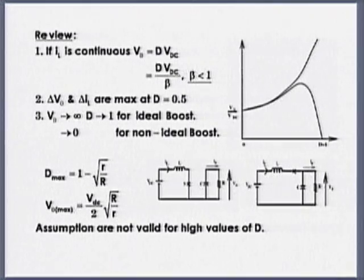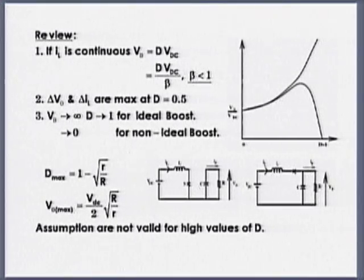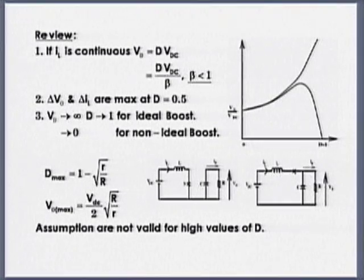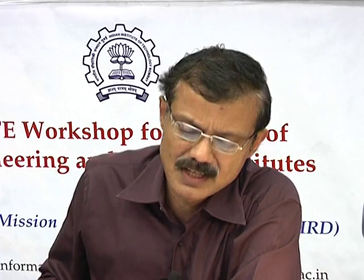As the power rating increases, you may have to parallel them and our control strategy may change. All these issues we will discuss when we finally integrate the entire solar system. Right now I am just discussing the basic building blocks. There was a question: can we parallel? Yes. How to parallel? What is the control strategy? What modification do we need to make? We will discuss in detail while integrating the entire power electronic interfaces to solar and to the grid.